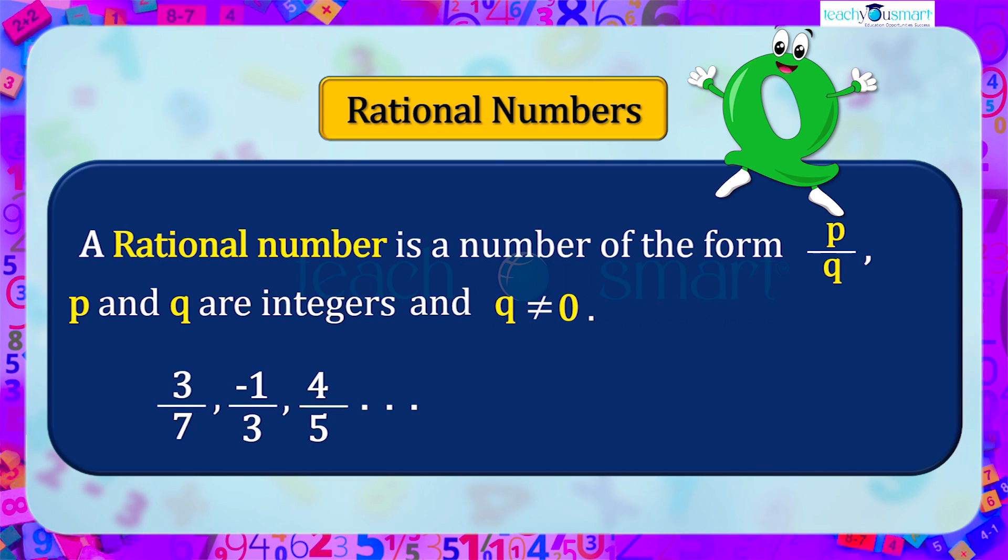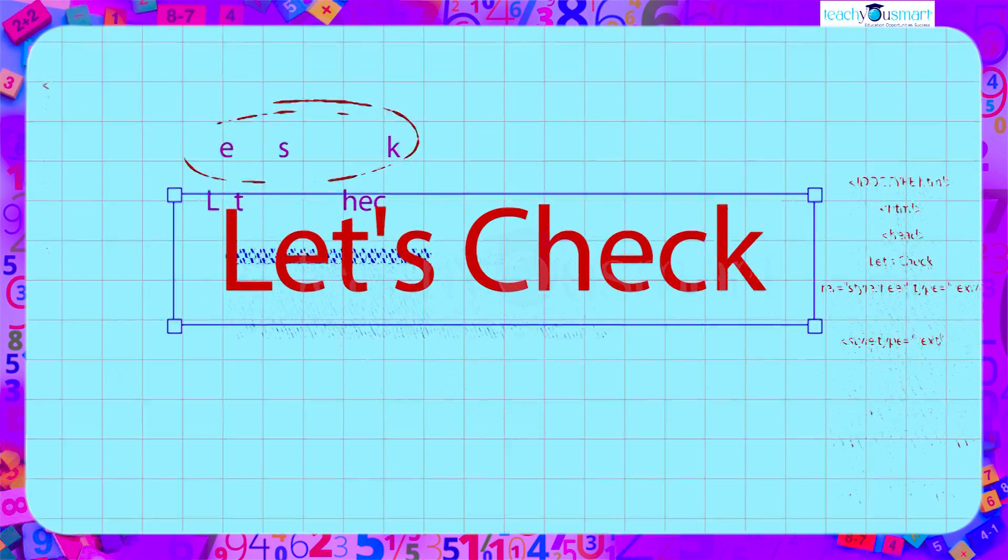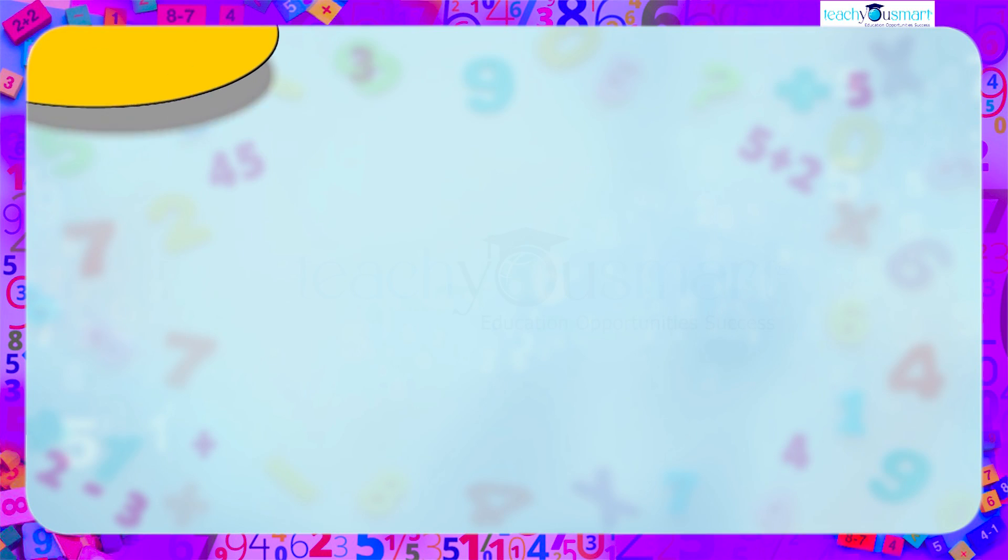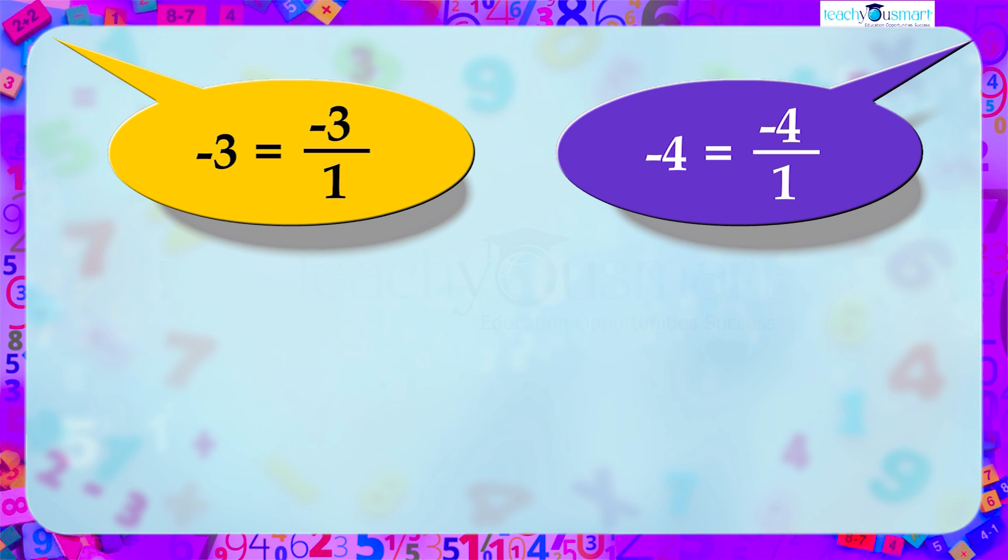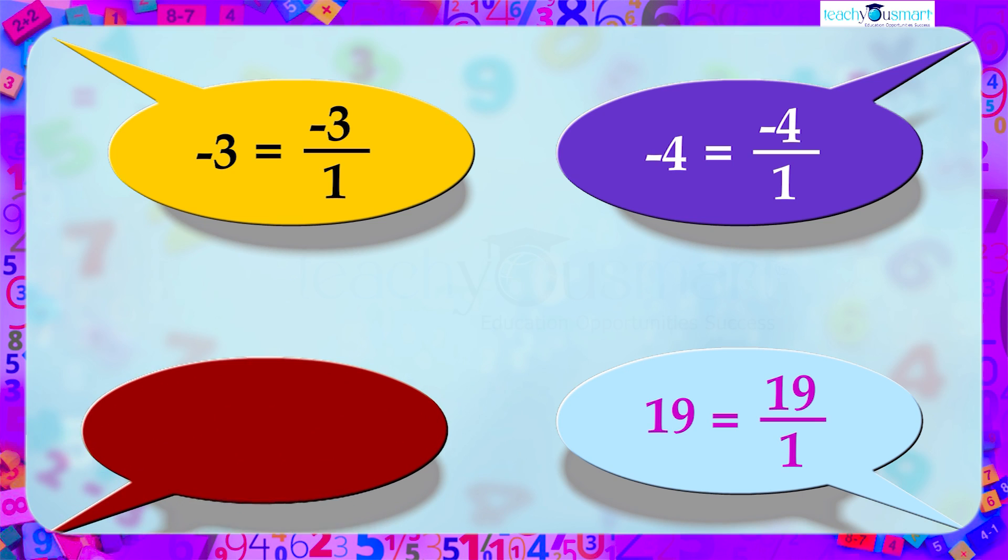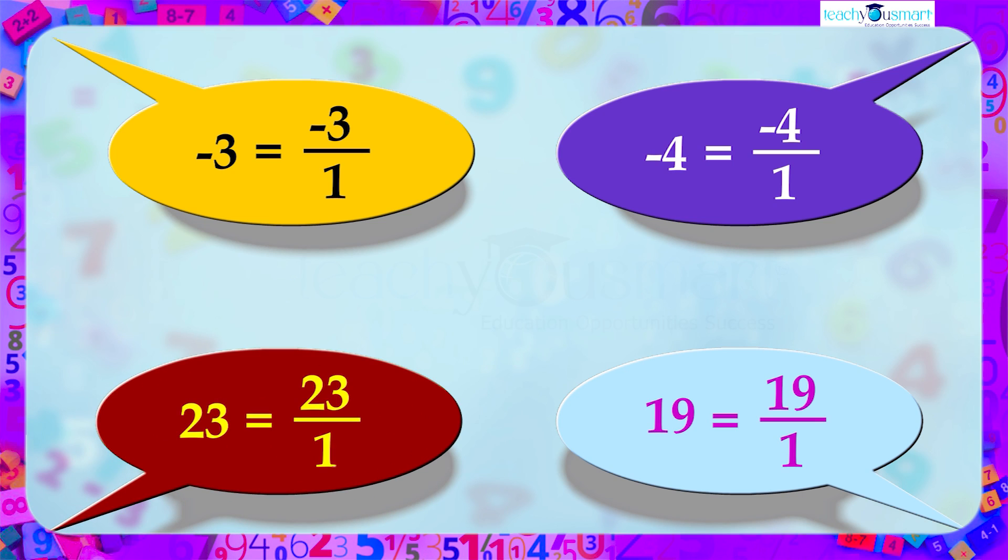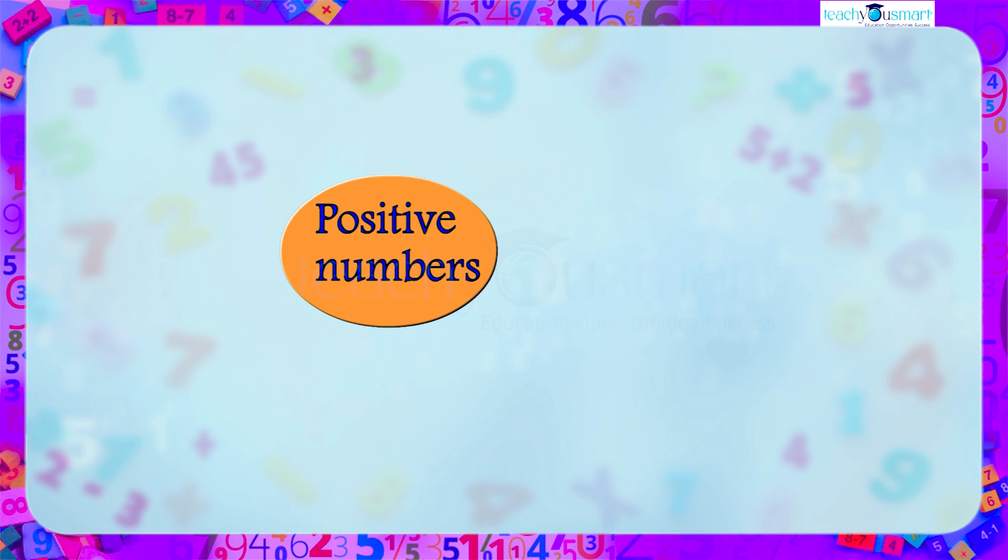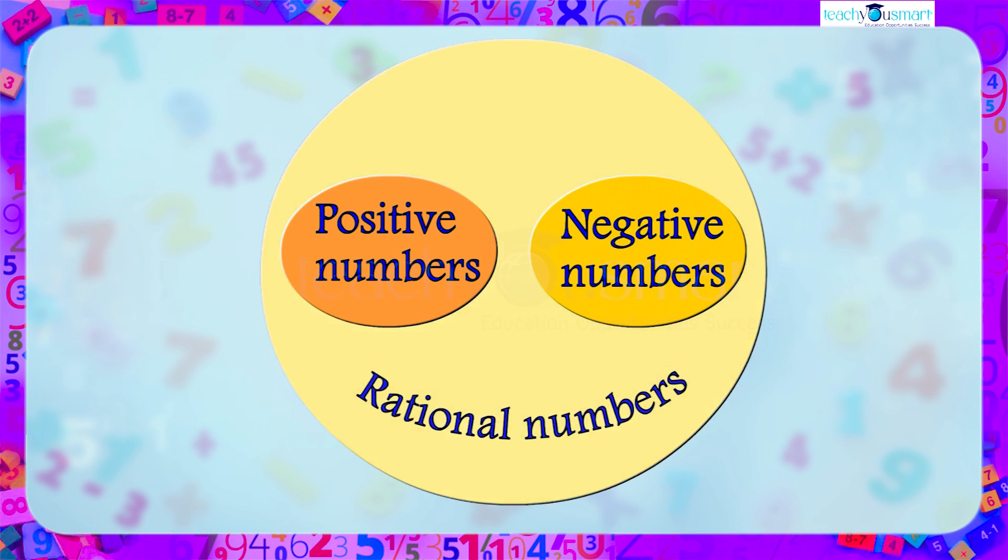Now, is it possible to determine whether positive numbers and negative numbers are rational numbers? Let's check. We can write minus 3 equals minus 3 by 1, minus 4 equals minus 4 by 1, 19 equals 19 by 1, 23 equals 23 by 1. That is, positive numbers and negative numbers are rational numbers.